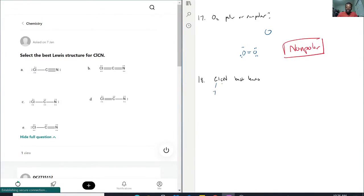Carbon will go in the middle because carbon has the most unpaired electrons. So we're going to have chlorine on one side, nitrogen on the other.